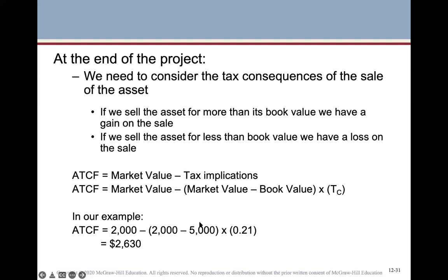Make sure to follow order of operations: do what's in the brackets first, then multiply by the tax rate, then subtract from the market value. That's how you arrive at the $2,630. If you see a mistake, it may often be incorrect order of operations — do your brackets first, then multiplication and division, and leave adding and subtracting until the end.